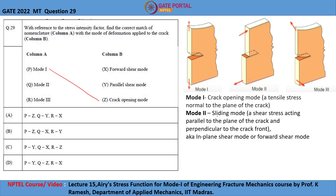Mode 2 is called the sliding mode, also known as in-plane shear mode or forward shear mode. It is a mode where shear stress acts parallel to the plane of the crack and perpendicular to the crack front, as shown in the second figure. So the correct option for Mode 2 is forward shear mode.